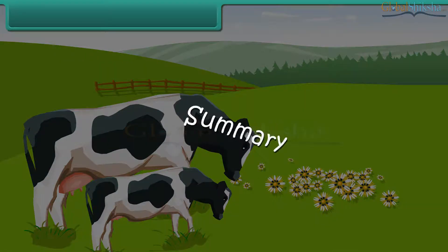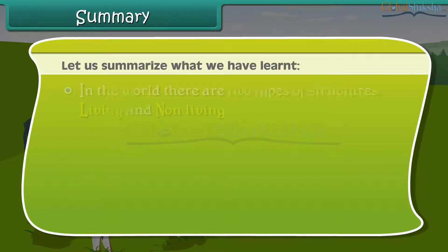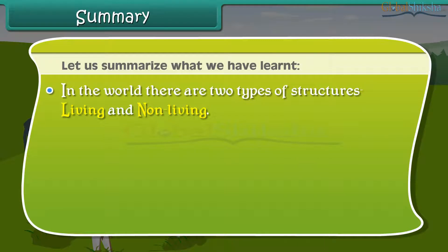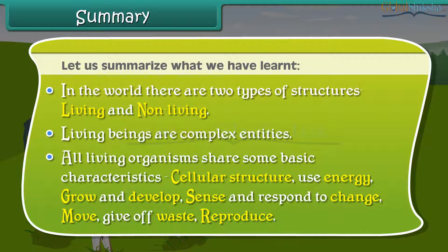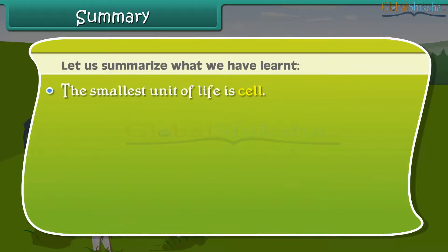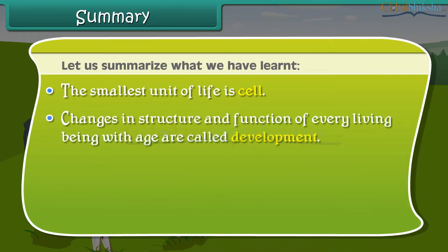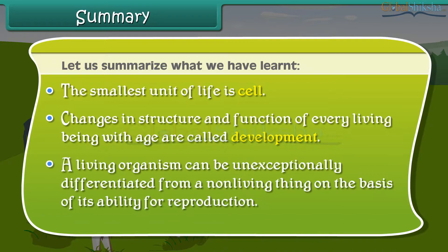Summary: In the world, there are two types of structures — living and non-living. Living beings are complex entities. All living organisms share some basic characteristics: cellular structure, use energy, grow and develop, sense and respond to change, move, give off waste, and reproduce. The smallest unit of life is the cell. Changes in structure and function of every living being with age are called development. A living organism can be unequivocally differentiated from a non-living thing on the basis of its ability for reproduction.